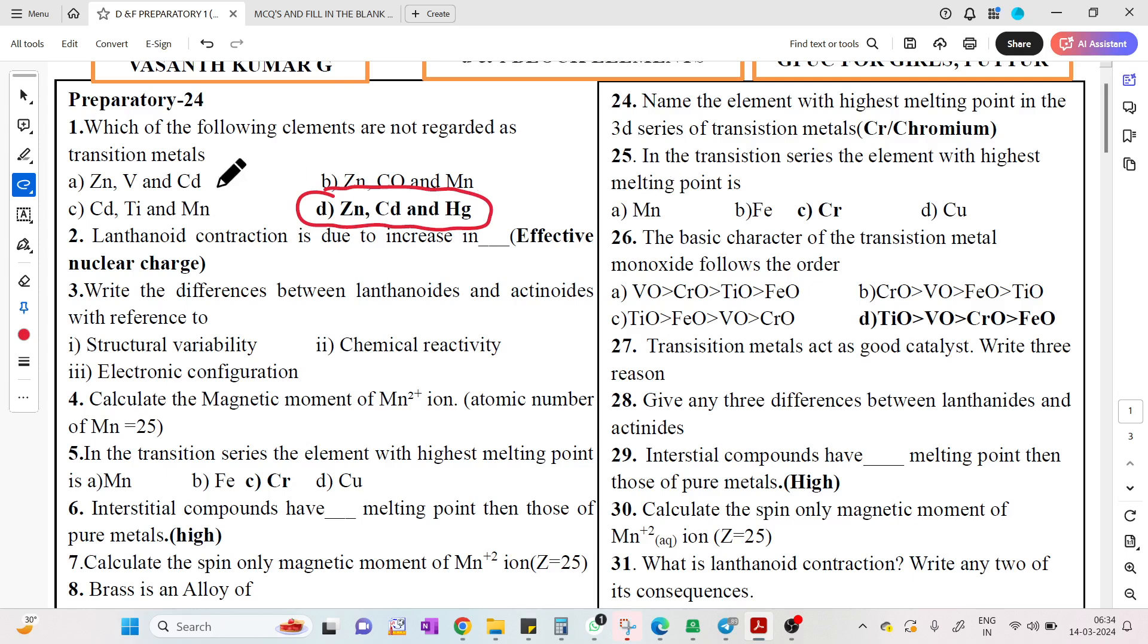Lanthanide contraction is due to - very important concept - lanthanide contraction is due to effective nuclear charge, increase in the effective nuclear charge. The difference between lanthanides and actinides: you can easily write structural variability, chemical reactivity, electron configuration.